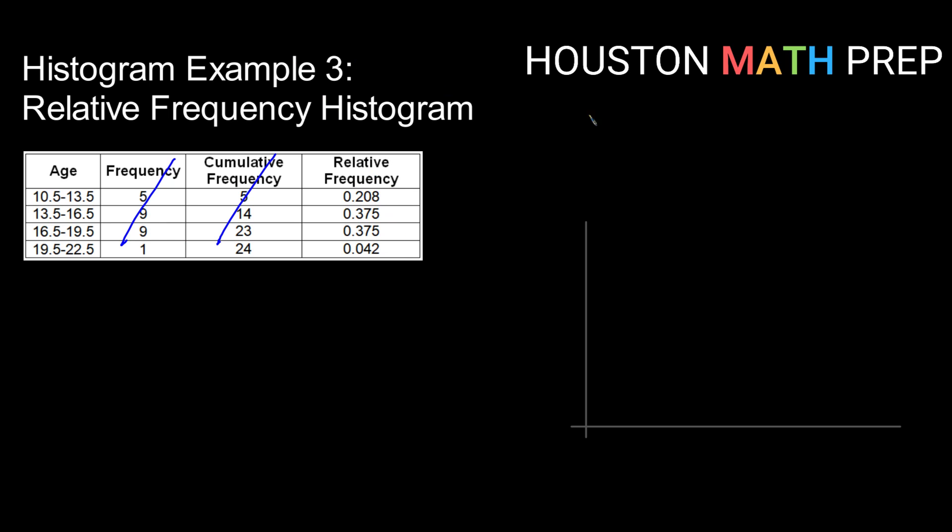So let's start as we have before by putting our labels and titles on our graph. So this is going to be a relative frequency histogram of ages.